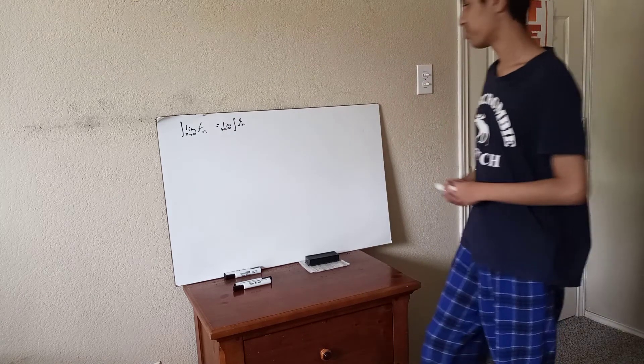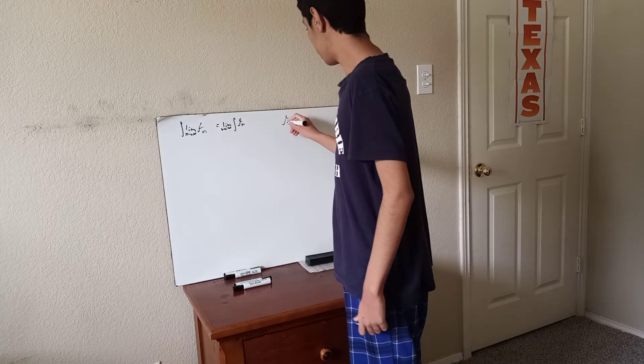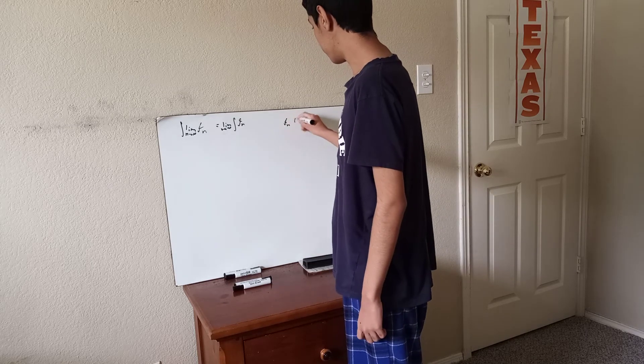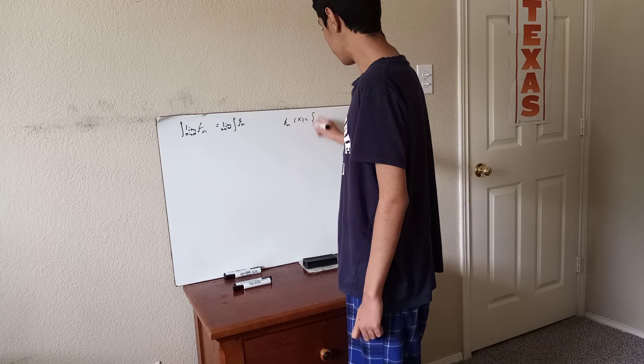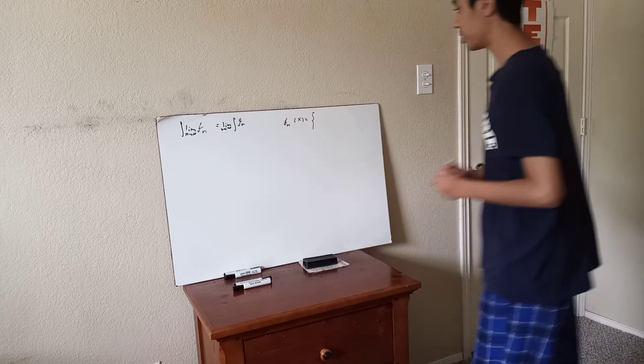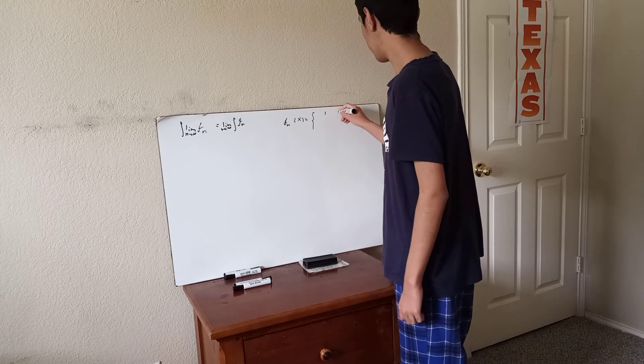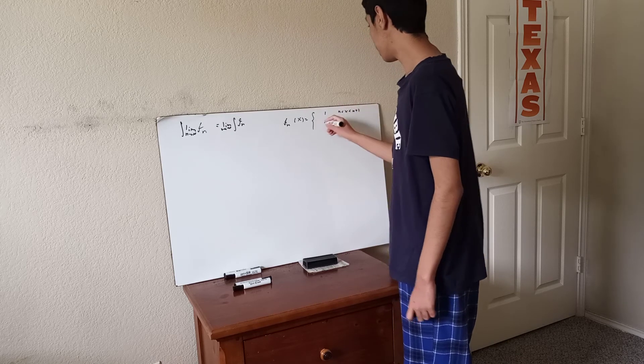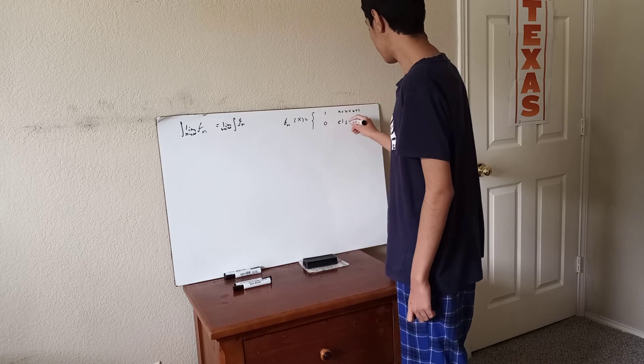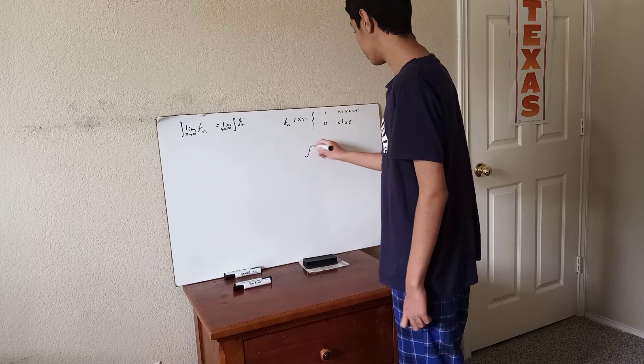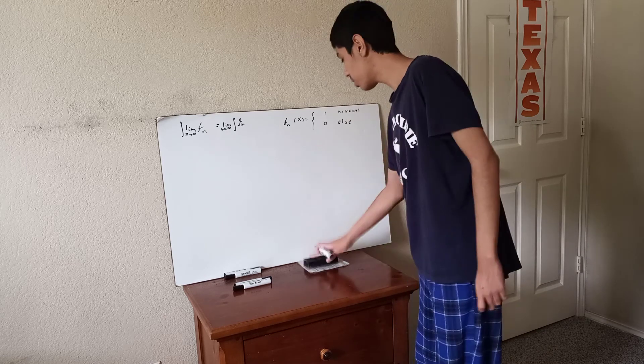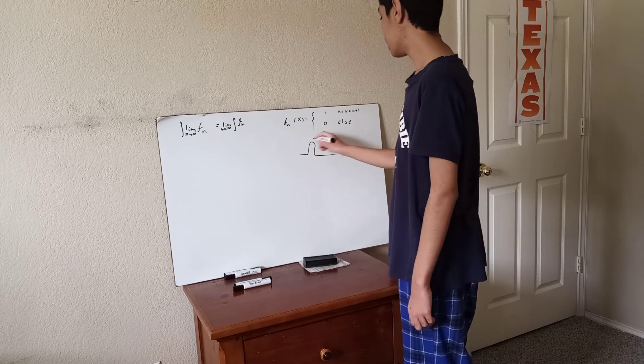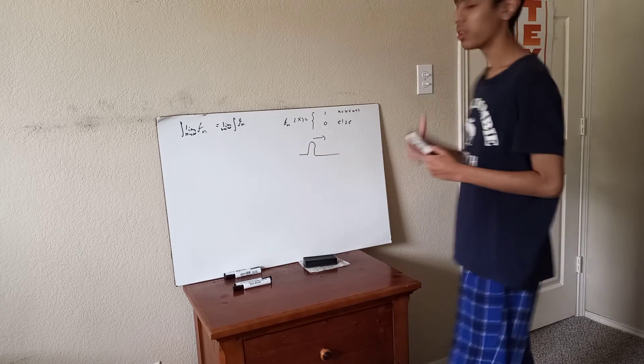That's actually not true, and here's why. If you look at these examples, the first example will be basically a function that's 1 when x is between n and n plus 1, and it's 0 otherwise. So if you graph it, it'll be 0 everywhere, and then there will be a little bump, and it'll keep on being 0. And as n gets bigger and bigger, this bump just moves to the right.